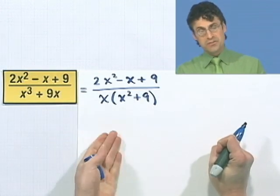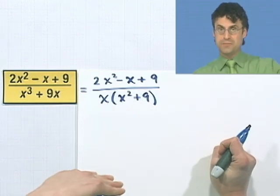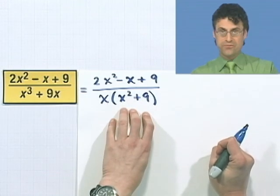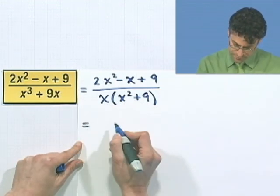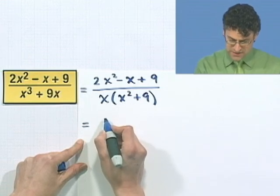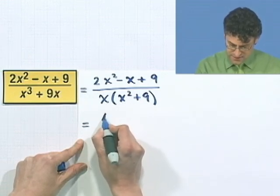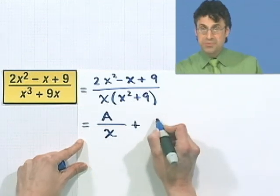This is not a linear factor, and I don't have a linear factor to a power like we saw in the previous example. This is really a quadratic factor. So how do we handle a quadratic factor if we want to write it as a partial quotient?